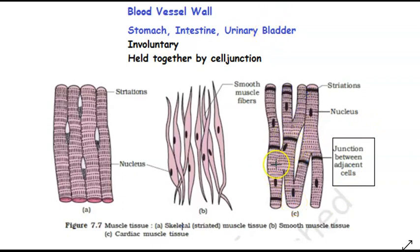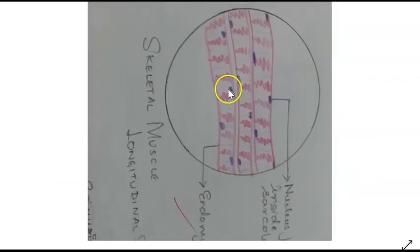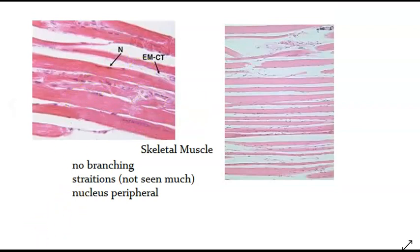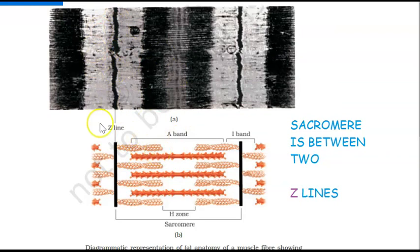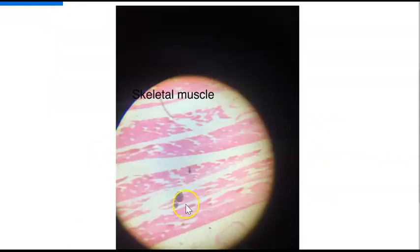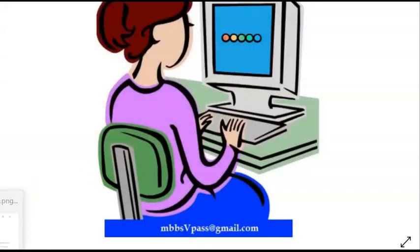A key feature to identify cardiac muscle under the microscope is branching — one fiber splits and becomes two. This branching pattern is how you identify cardiac muscle. Skeletal muscle, as drawn in lab, shows the characteristic striations. The sarcomere structure — with Z-lines, I-bands, and A-bands — is part of the detailed understanding of how skeletal muscle contracts.